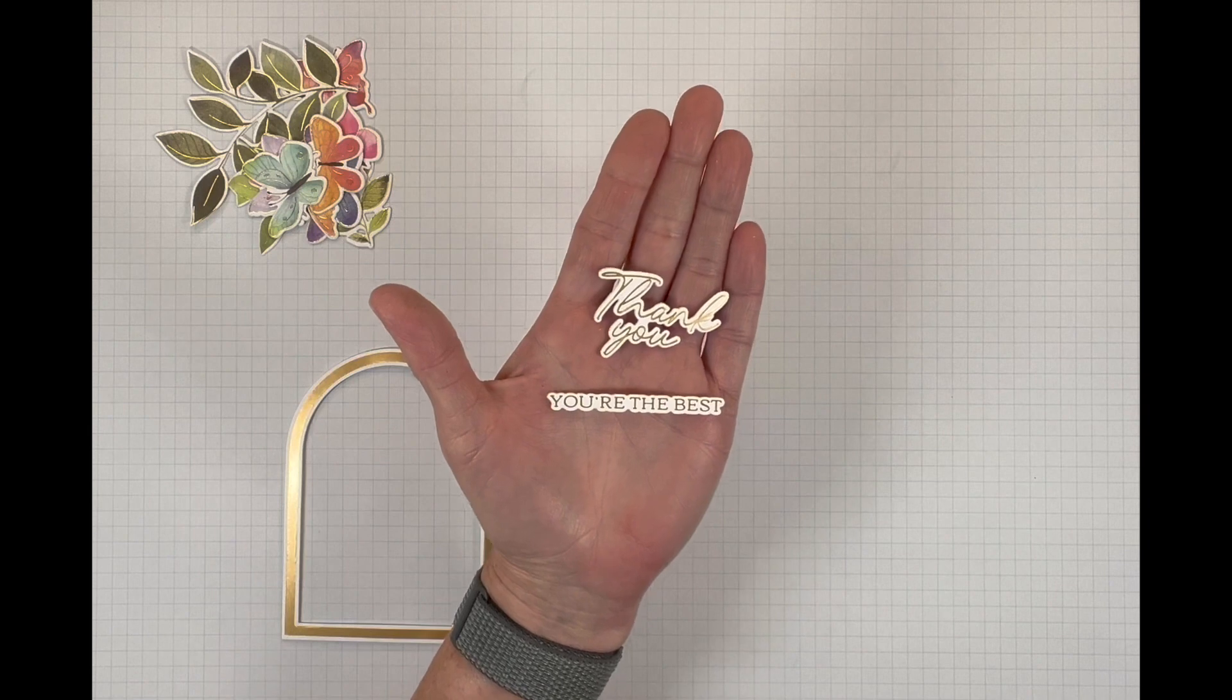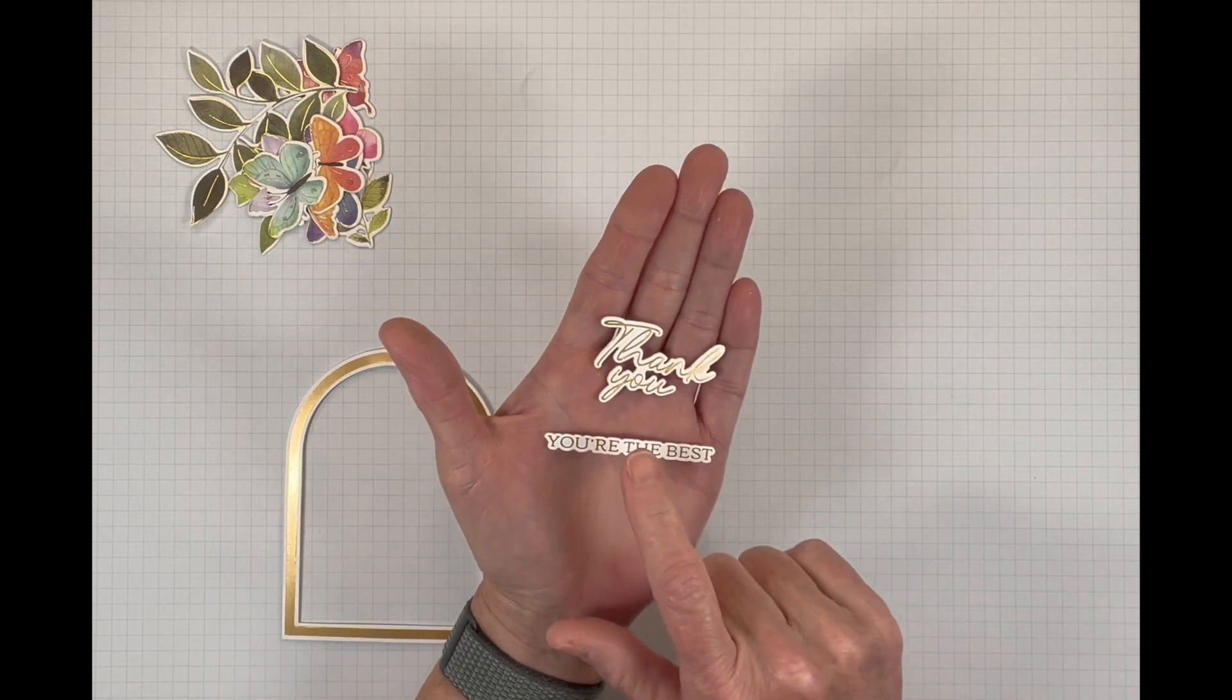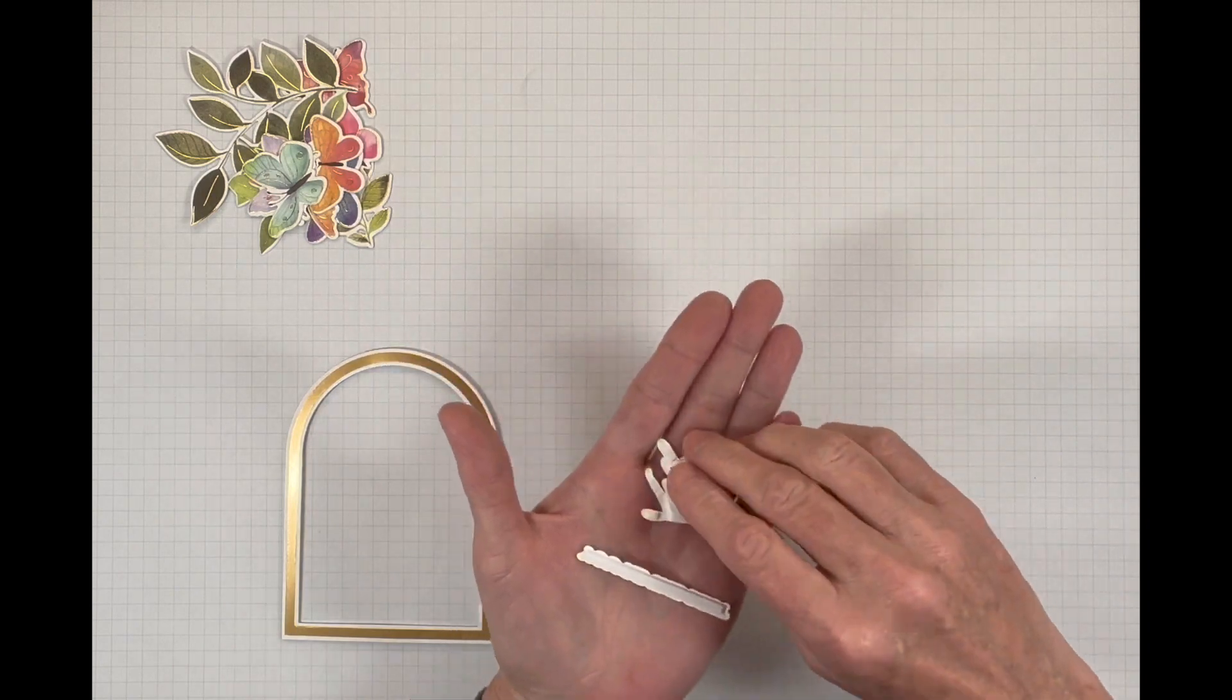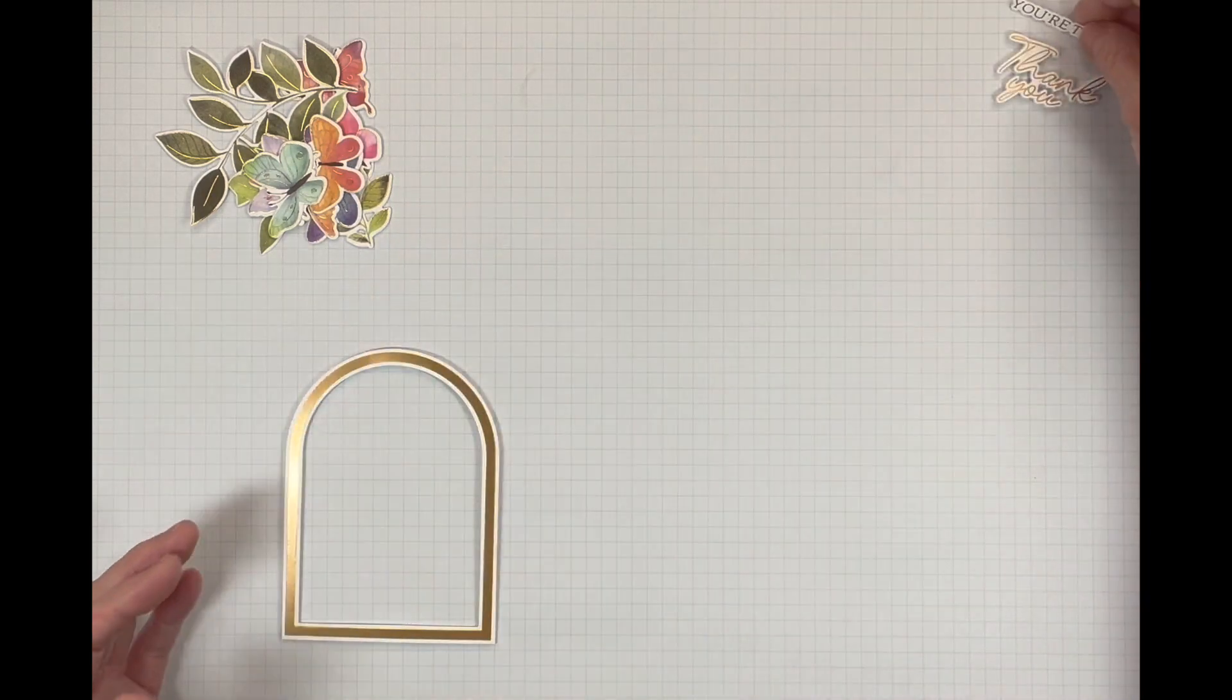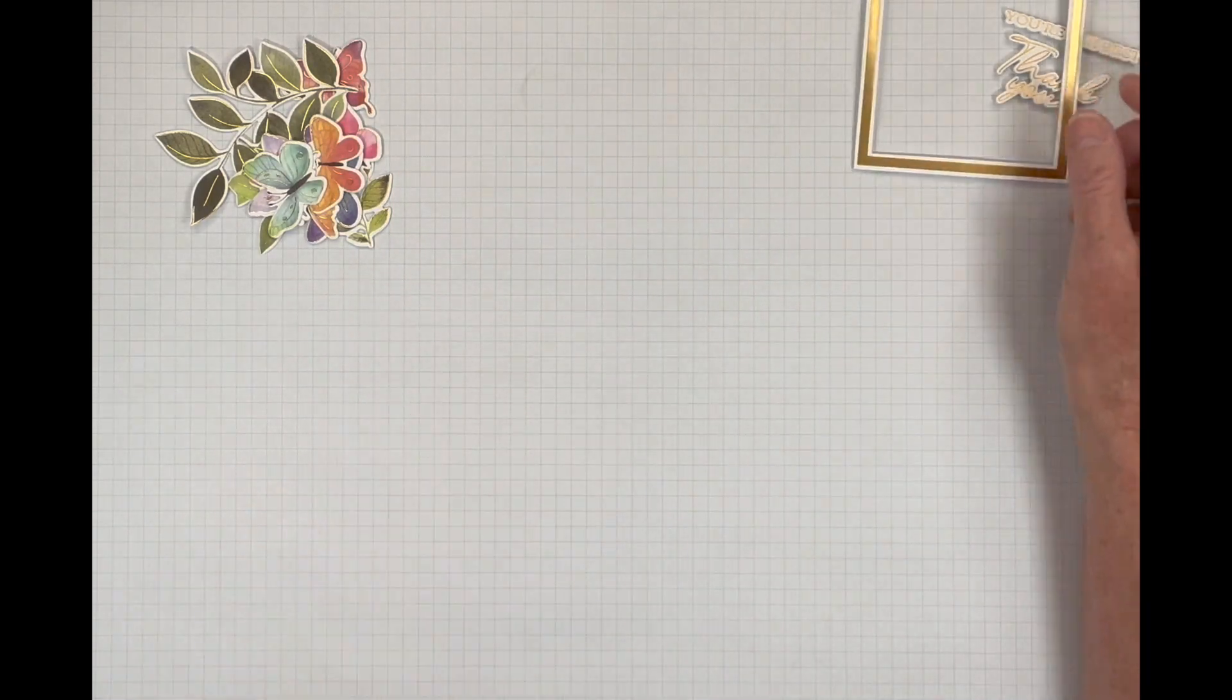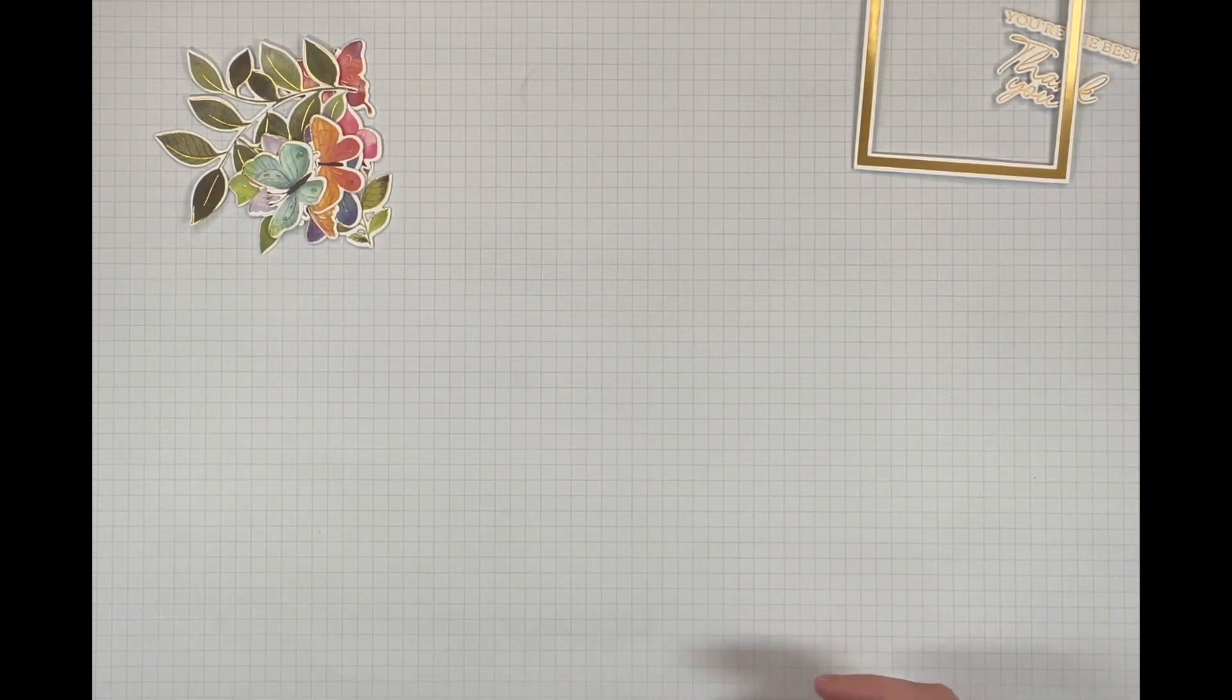So I got my sentiments die cut and I stacked them twice. And then I also put foam tape on the back of those. And while I was at it, I also added foam tape to my arch. So now let's work on the rest of our background.